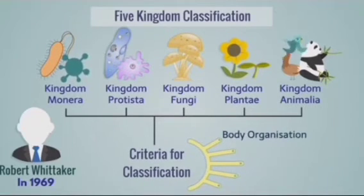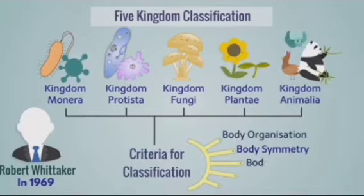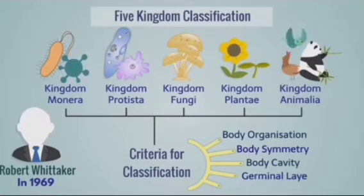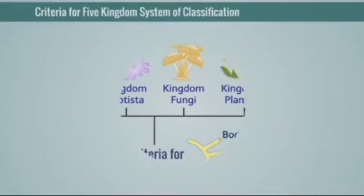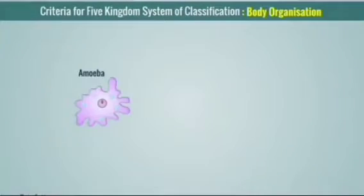Animals are classified based on some special characters. They are body organization, body symmetry, body cavity, germinal layer, and body segmentation.